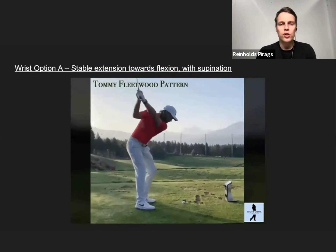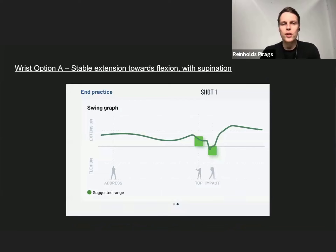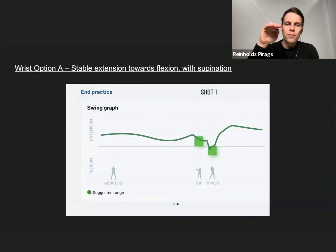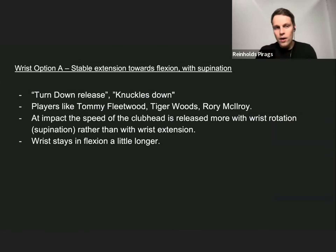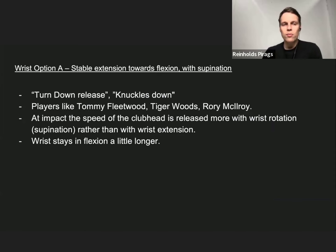Using HackMotion data in the graph view, you can precisely see how smooth his wrist motion is. The green line shows the motion staying flat from address to the top, then there's a gradual flexion movement from top to impact. This swing is sometimes called a turndown release or knuckles down, and it's used by great players like Tommy Fleetwood, Tiger Woods, and Rory McIlroy — they all share this release pattern.